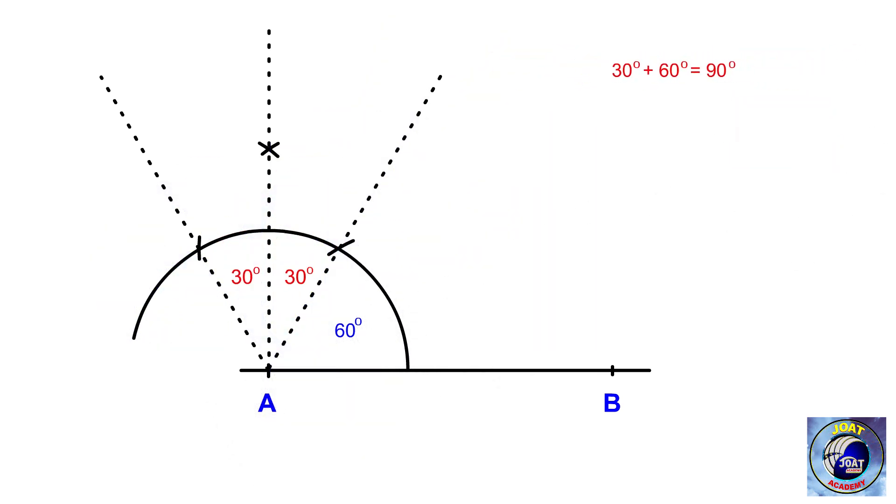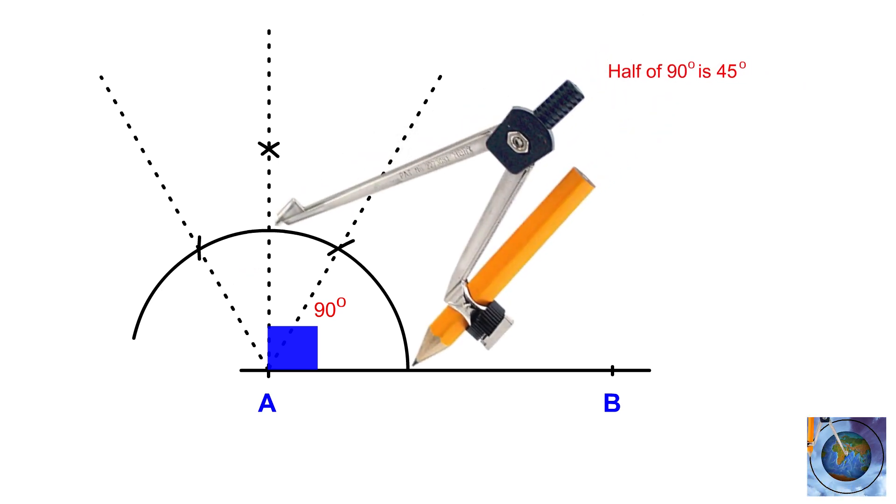Adding 30 degrees to the existing 60 degree angle will give you a 90 degree angle. Divide the 90 degree angle into two equal parts, resulting in a 45 degree angle.